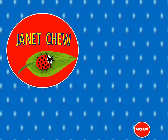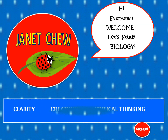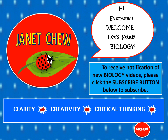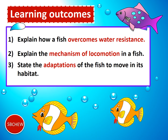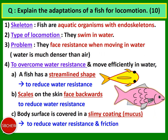Welcome back to another video on Form 5 Biology. My name is Janet and I'll be teaching you the topics today. Here are the learning outcomes for this lesson: after this lesson we should be able to explain how a fish overcomes water resistance when swimming, explain the mechanism of locomotion in a fish, and state the adaptations of the fish to move in its habitat.